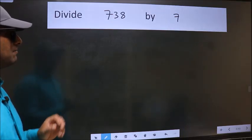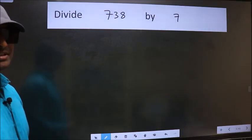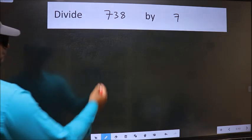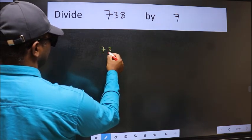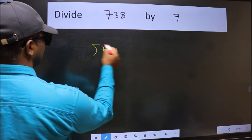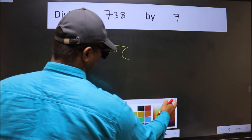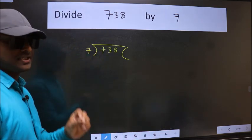Divide 738 by 7. To do this division, we should frame it in this way: 738 here and 7 here. This is your step 1.